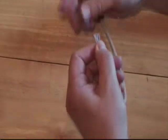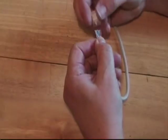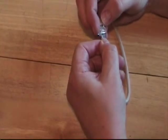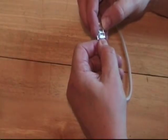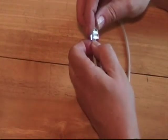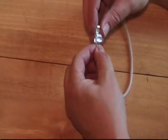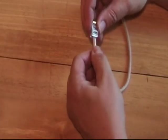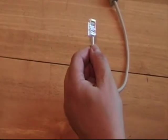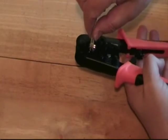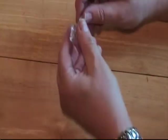Take an RJ45 connector and with the locking tab facing down, insert the wires into the connector, making sure that the order of the wires does not change. With the wires fully seated, crimp the connector to complete the assembly.